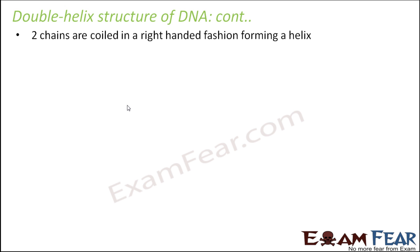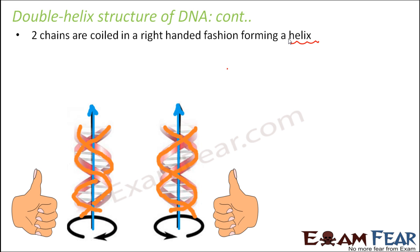The two chains of polynucleotide are coiled in a right-handed fashion forming a helix. The helix can be either right-handed or left-handed. If you take your right hand and curl all your fingers except the thumb, your thumb points upward and your fingers curl in the anti-clockwise direction — that is the direction in which the two chains coil around the central axis in a right-handed helix.